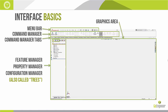We also have the large section called the graphics area. As we start to build up our part, that's where we'll see it represented in three dimensions. And lastly, a couple of times through the class your instructor will refer you to the right-hand side of the software, where we find the task pane.